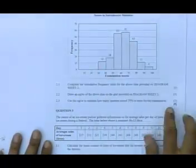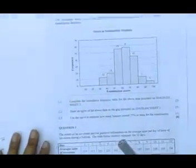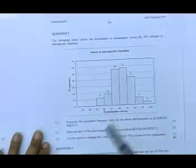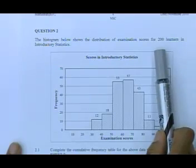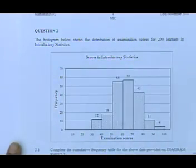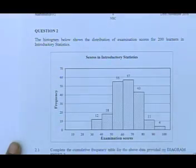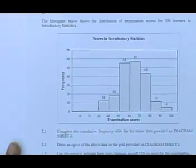The histogram below shows the distribution of examination scores for 200 learners. 200 learners, it's very important to know how many learners, that is the value of n. So there were 200 learners, they gave you this histogram.